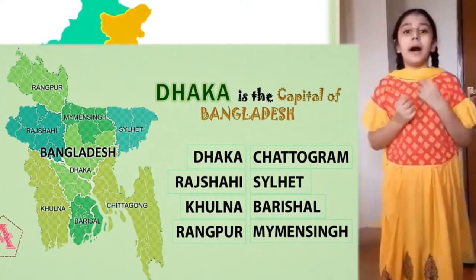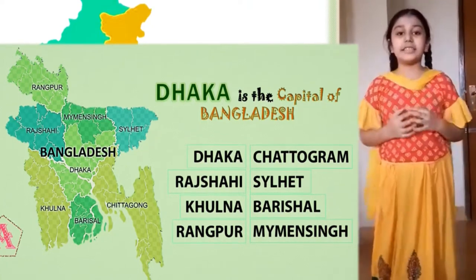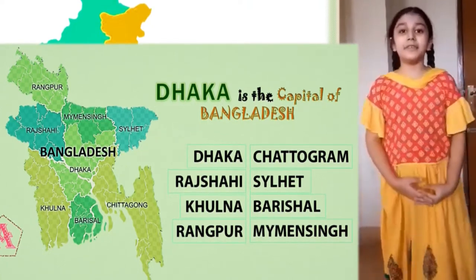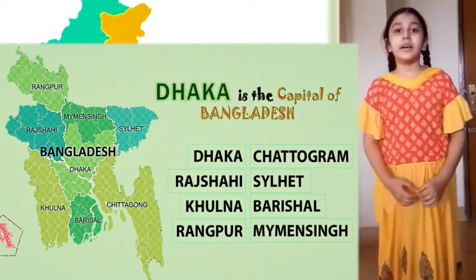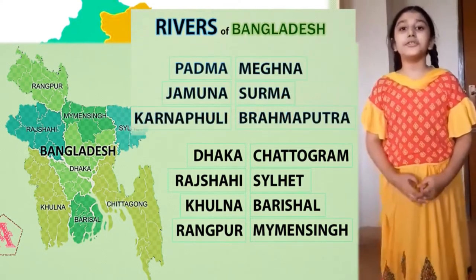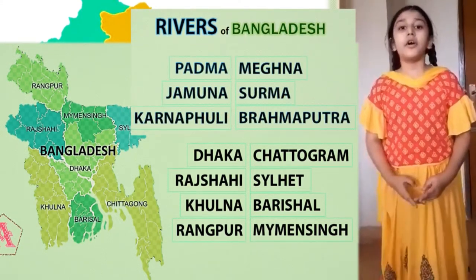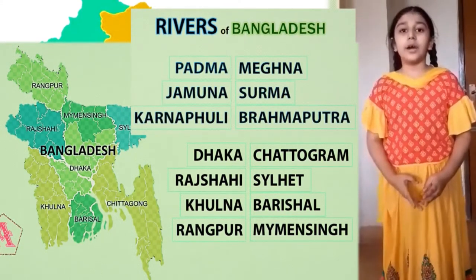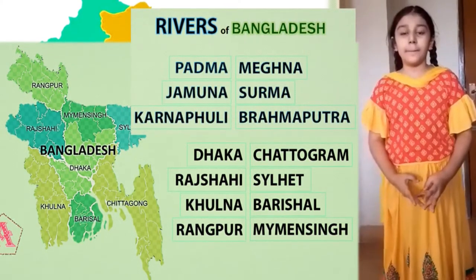Bangladesh has six main rivers: Padma, Meghna, Jamuna, Surma, Karnaphuli, and Brahmaputra.